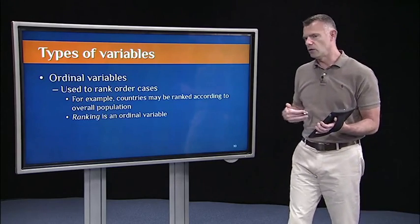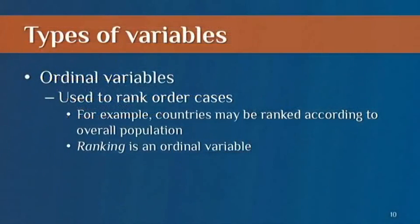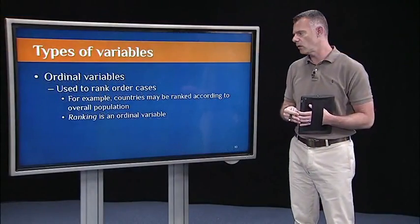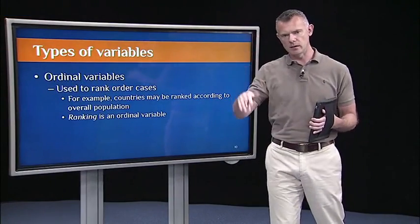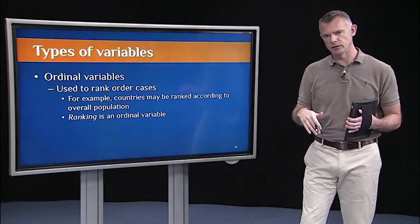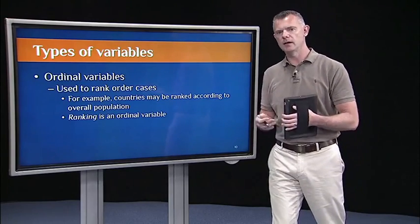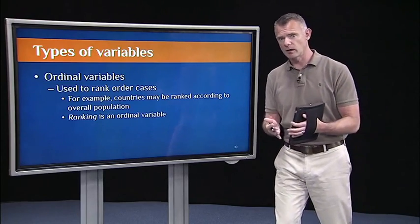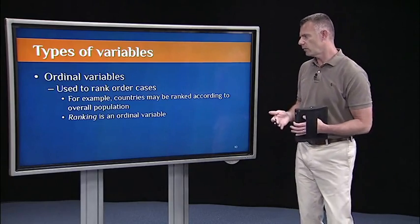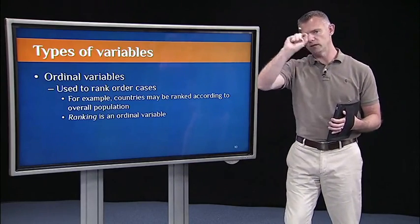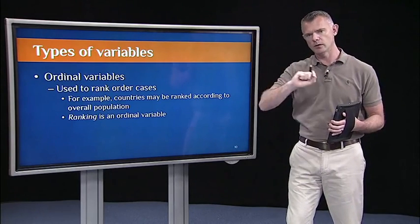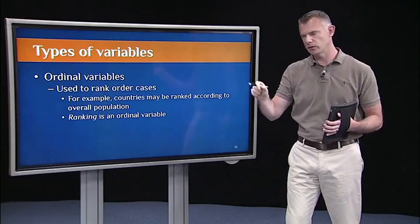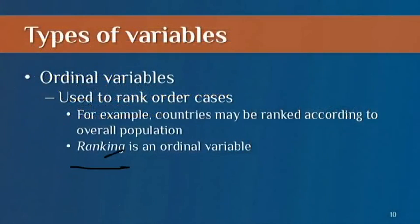The next type of variable is an ordinal variable. Ordinal variables are used to rank order cases in a data structure. So again, if we think about the countries where all of our students are coming from in this statistics one course on Coursera. I might rank the countries according to population. So some countries like China, India, have much larger populations than smaller countries, say like France, or a really small country like Luxembourg, have smaller populations. And if I just wanted to rank order them in terms of who has the highest population, they get a number one. Who has the second highest population, they get a number two. Then ranking would be an ordinal variable.